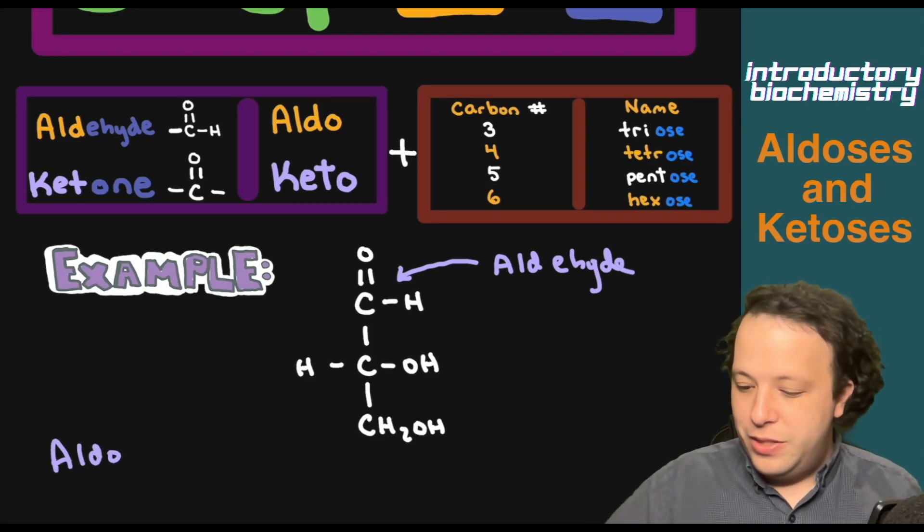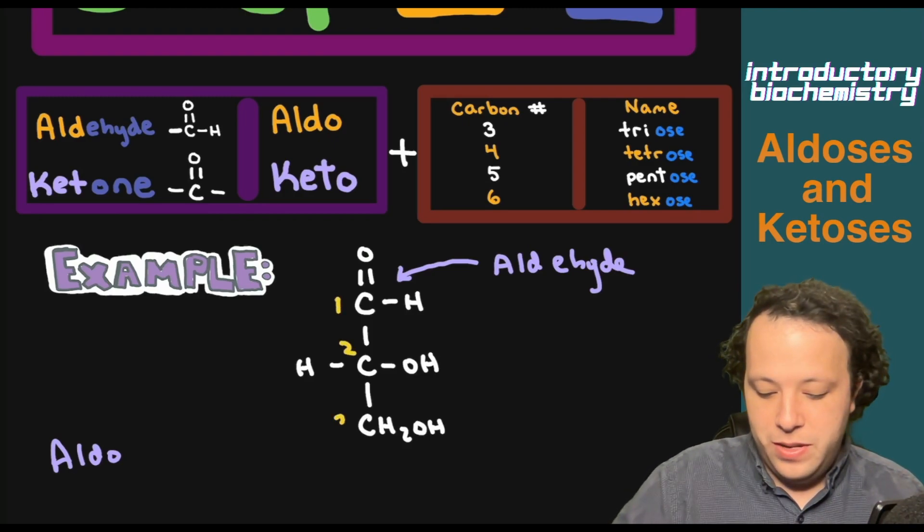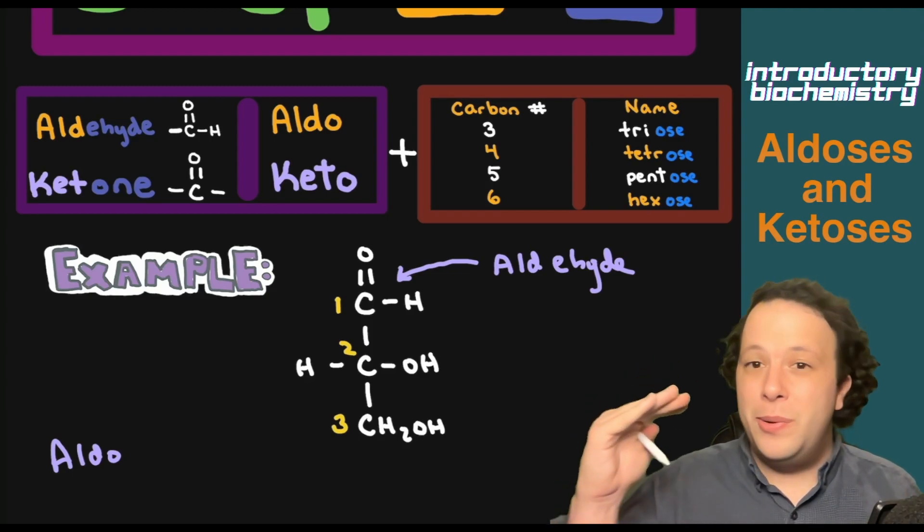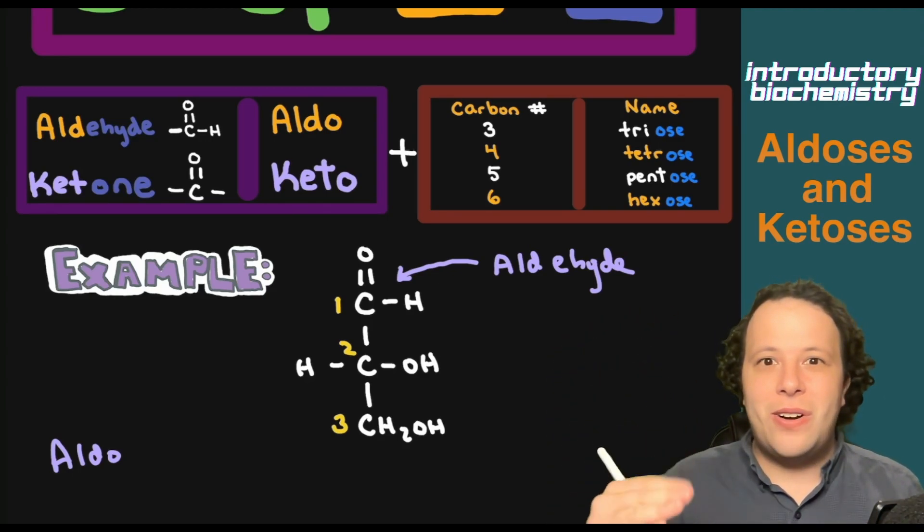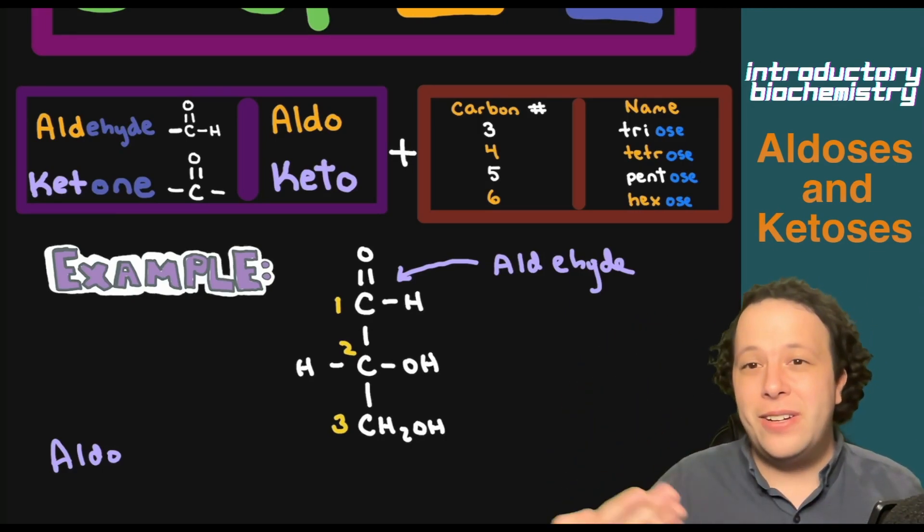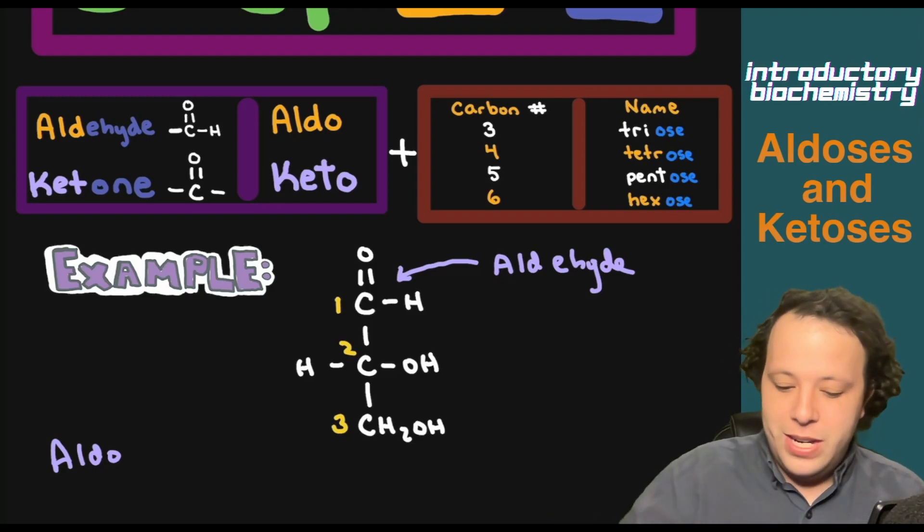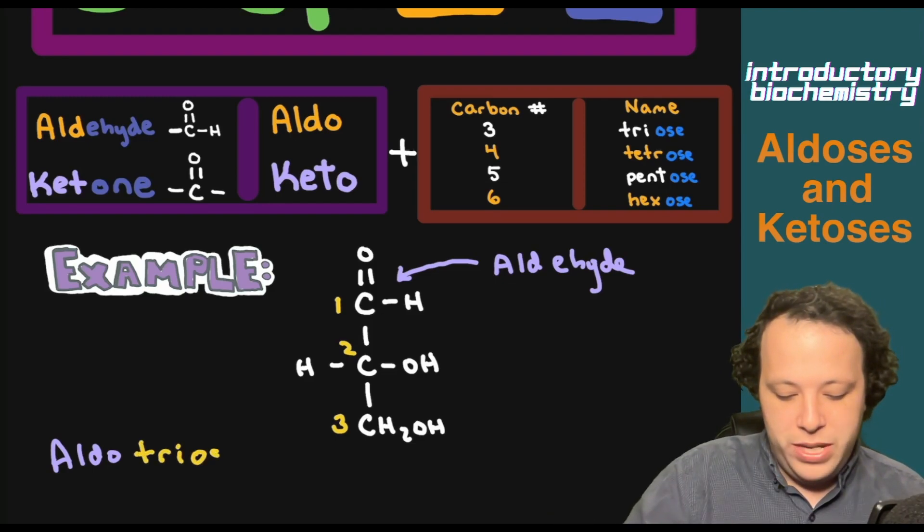So let's write aldehyde is what we have as our functional group, so it's going to be aldo. Now, how many carbons does it have? So what we will do is we are going to number. We have one, two, three. We start numbering all the way at the top of our Fischer projection. We number down there. Start all the way as close to the most oxidized carbon as you can to the aldehyde or the ketone.